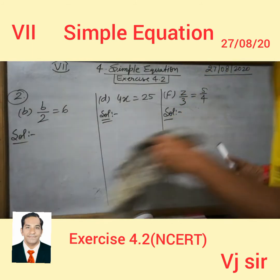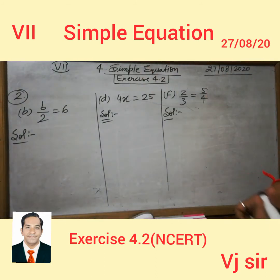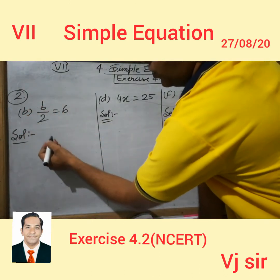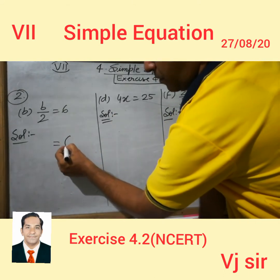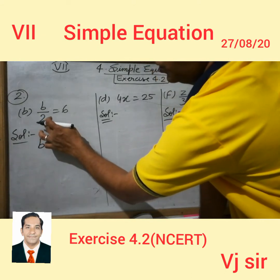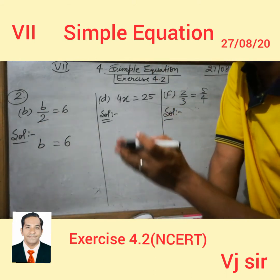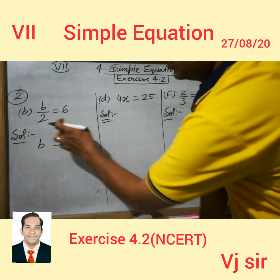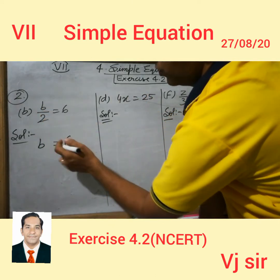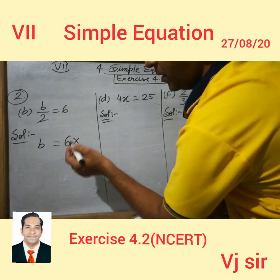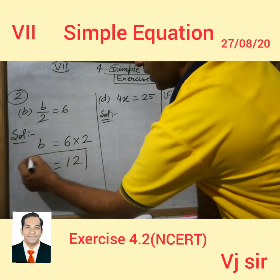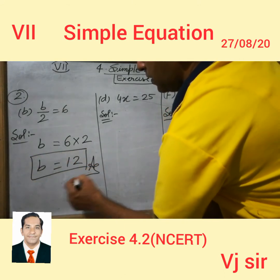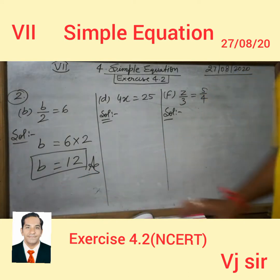Now we are moving to question number 2. Question 2B: B upon 2 is equal to 6. We will write which values are on their own place. It will transfer 2 to the right-hand side. Since B is divided by 2, when it transfers to the other side it becomes multiplication. So 6 multiplied by 2 is equal to 12 — the value of B is 12.